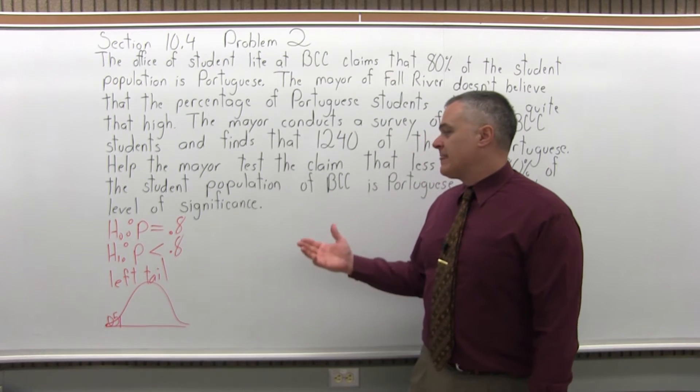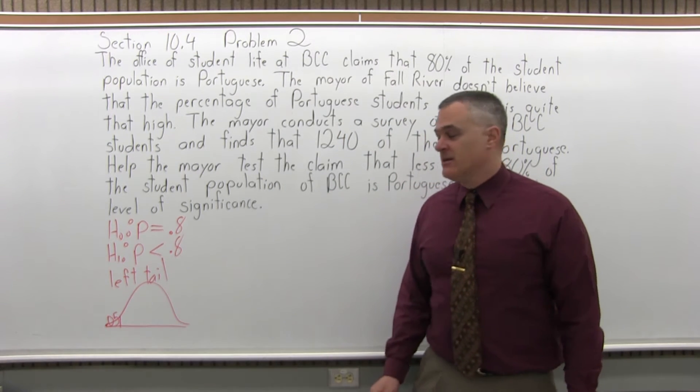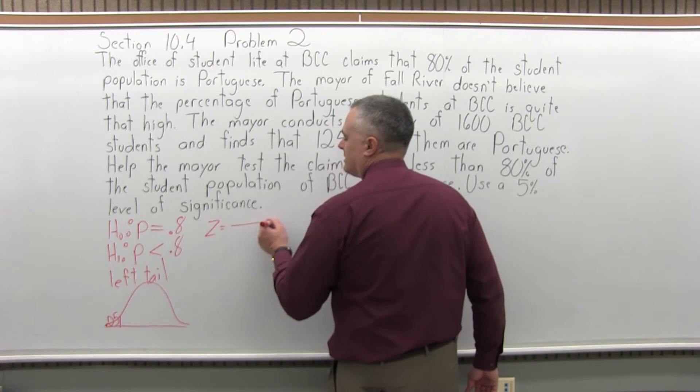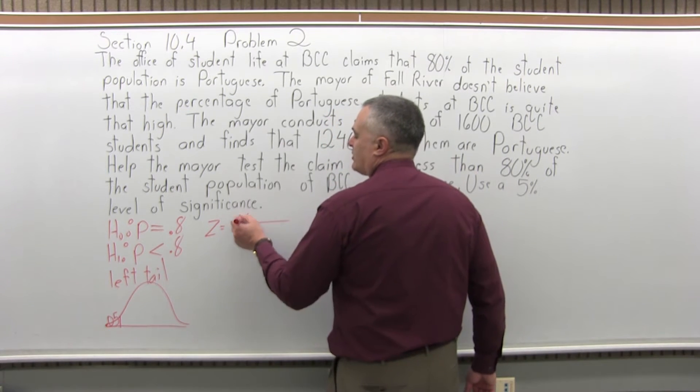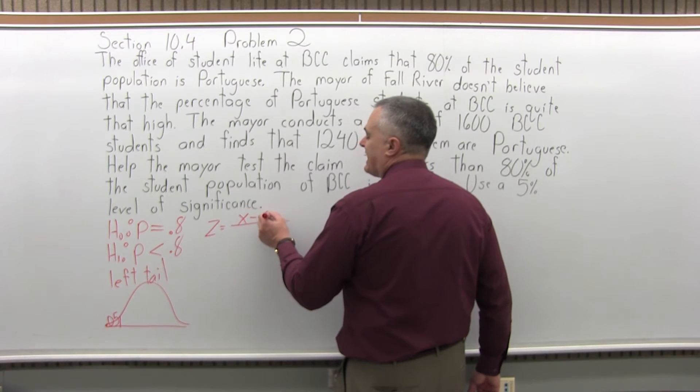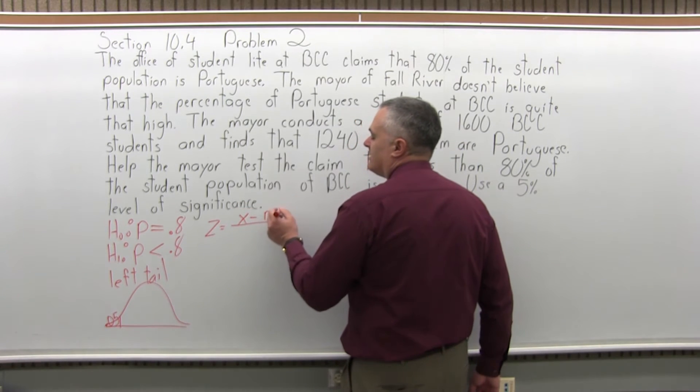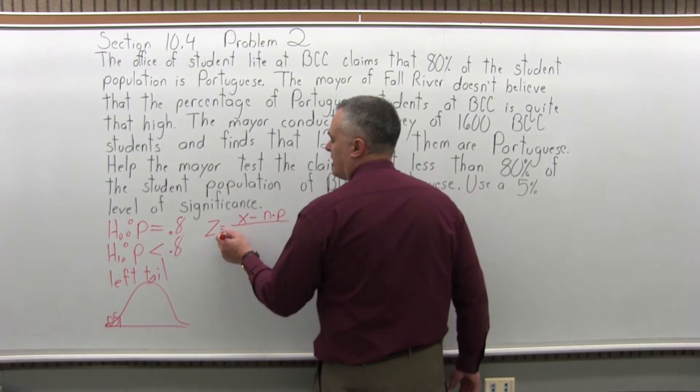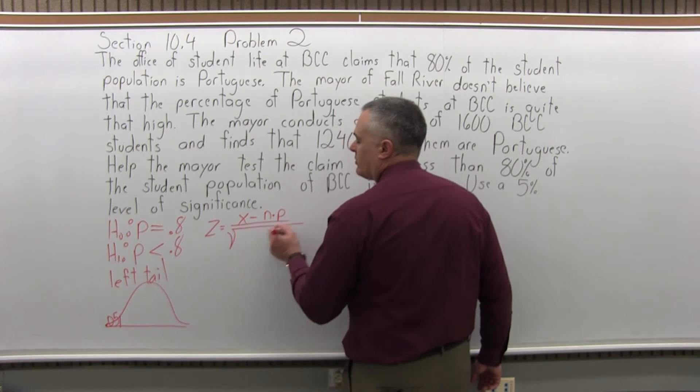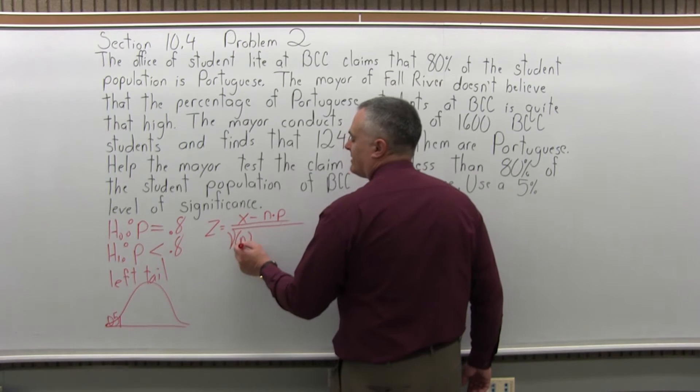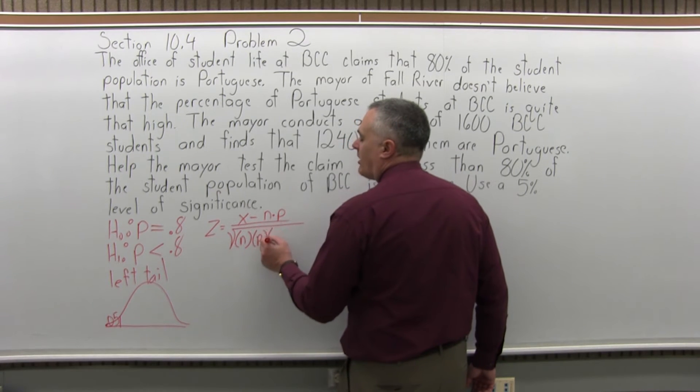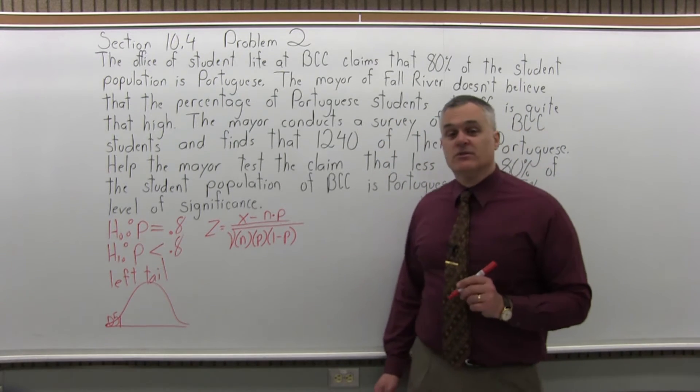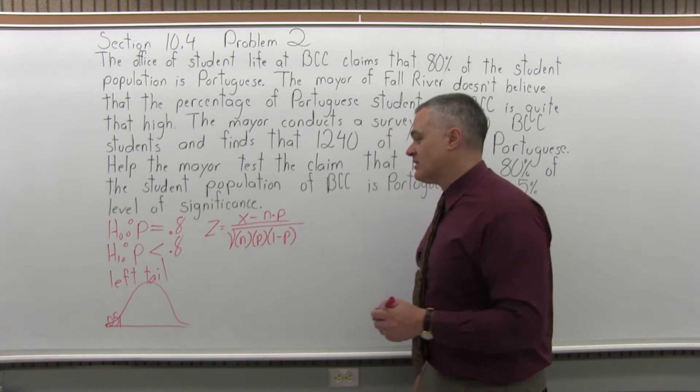Step four, calculate your value for z. The formula for z is z equals x, your observed number of successes, minus n times p, the size of the sample times the population proportion that you're testing, over the square root of n times p times 1 minus p. So that's the formula that we have to use. Let's go ahead and fill in the numbers and start doing some computation.